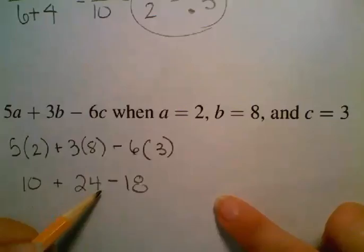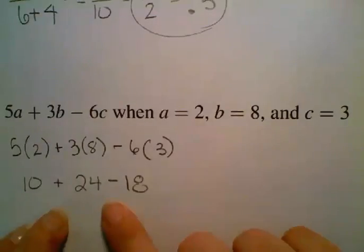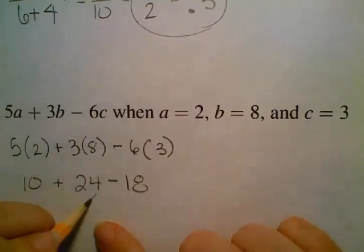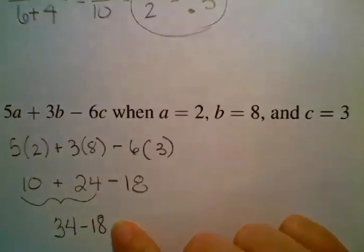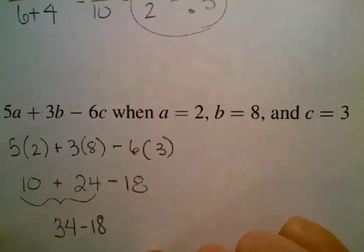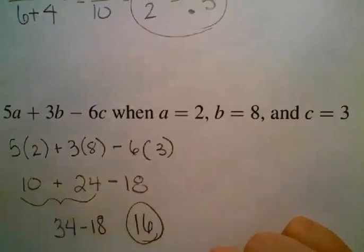We have addition and subtraction here. But which is presented to us first? Well the addition is. So we've got to do this right here first. So we've got 34 minus 18. And that of course, 34 minus 18 gives us 16 for our final answer.